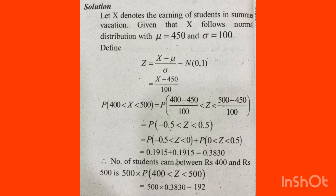Using the logarithm table for the correct term, the result is 0.3830. The number of students earning between 400 and 500 is 500 times 0.3830, which equals approximately 192 students.